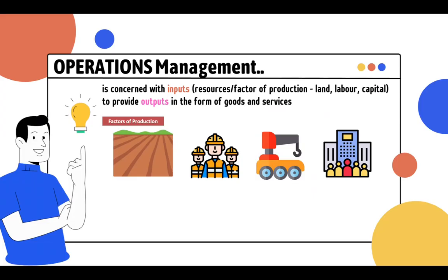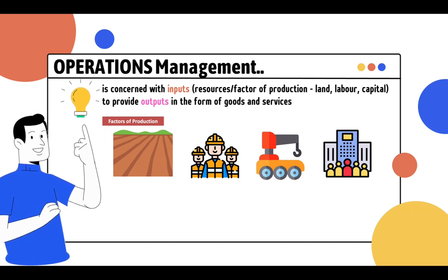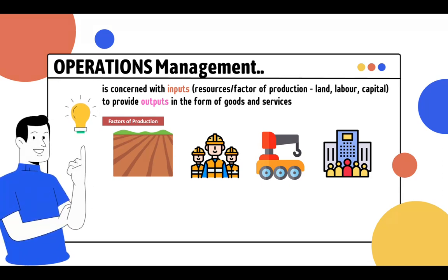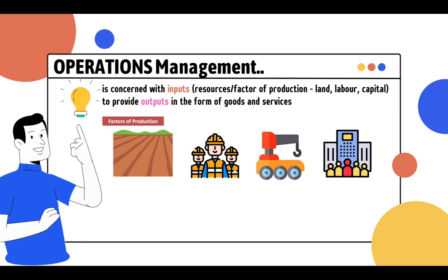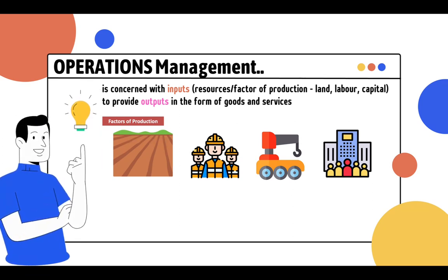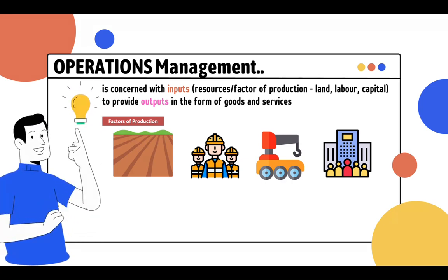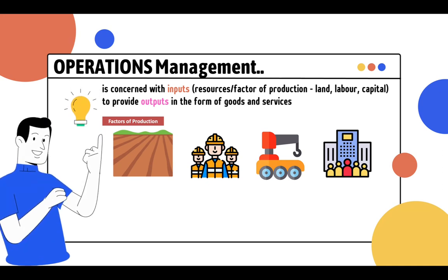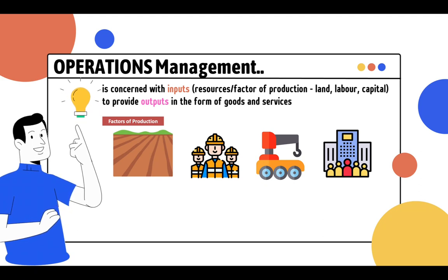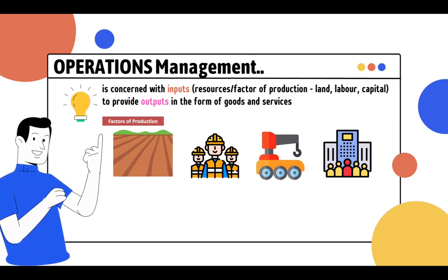Now, what is operations management? To operate on something is to make new or to create new, to make things better. So in business, operations management refers to inputs and the transformation of those inputs into outputs — the creation of outputs in the form of goods or services that you can purchase, use, and consume as intended. In companies, the use of factors of production is very much central to operations.